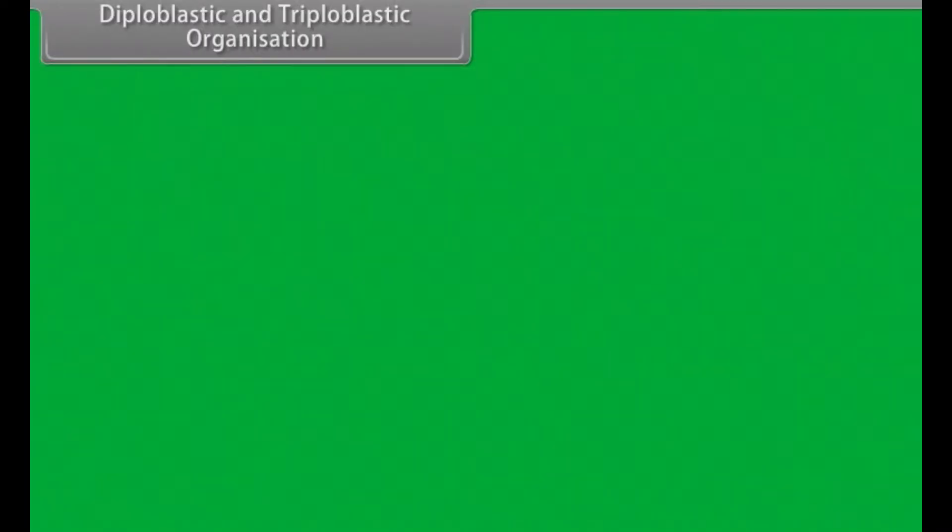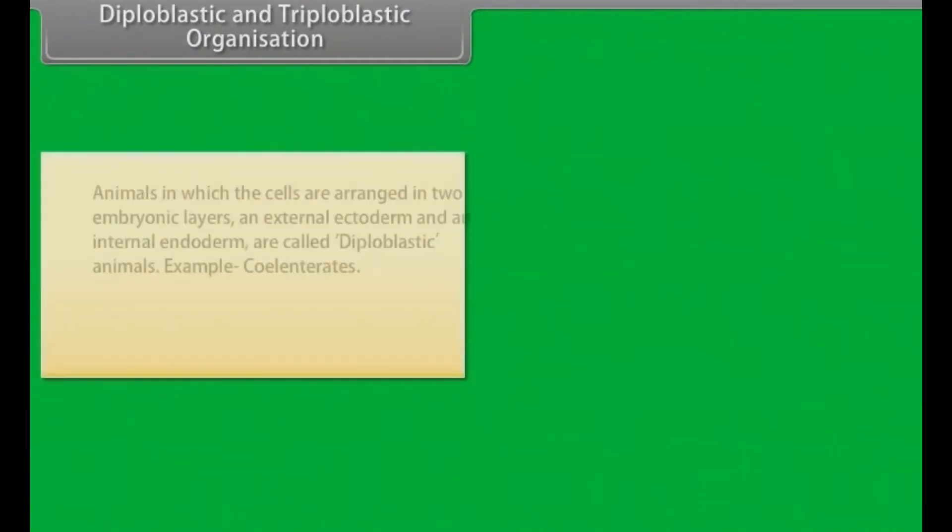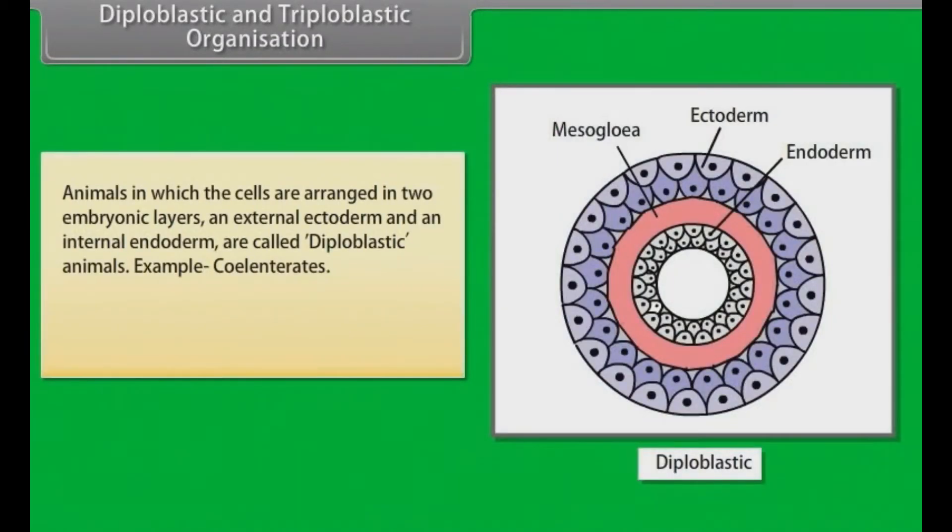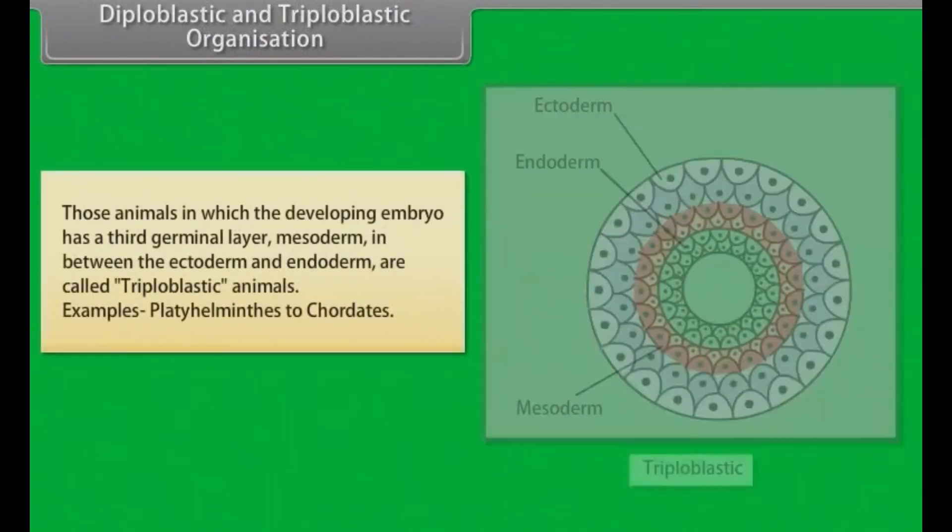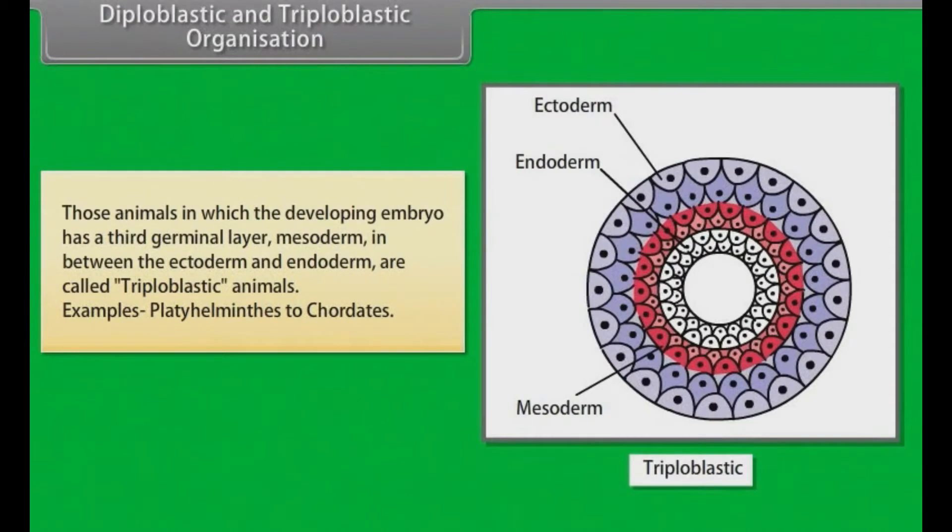Diploblastic and triploblastic organization. Animals in which the cells are arranged in two embryonic layers, an external ectoderm and an internal endoderm are called diploblastic animals. Example: Coelenterates. An undifferentiated layer, mesoglea, is present in between the ectoderm and the endoderm. Those animals in which the developing embryo has a third germinal layer, mesoderm, in between the ectoderm and endoderm are called triploblastic animals. Example: Platyhelminthes to chordates.